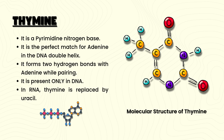Thymine is present only in DNA. In RNA, thymine is replaced by uracil. The molecular structure of thymine contains carbon, nitrogen, hydrogen, and oxygen, as shown in the given figure.